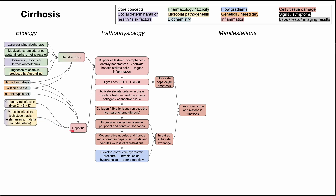More common causes of hepatitis include chronic viral infections. Hepatitis C is the most common viral cause of hepatitis leading to cirrhosis, followed by hepatitis B and D. There are also parasitic infections that can cause hepatitis, more common on the Indian subcontinent and African continent, including schistosomiasis, leishmaniasis, and malaria.